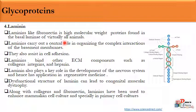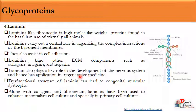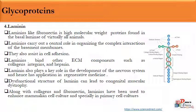The next component is laminin, a high molecular weight protein found in the basal lamina of all animals. It plays a central role in organizing the complex interactions of the basement membrane. Laminin also helps in cell adhesion and in the development of the nervous system, and is applied in regenerative medicine. Dysfunction of laminin can lead to congenital muscular dystrophy. Along with collagen and fibronectin, laminin can be used in mammalian cell culture as an attachment matrix and has many binding regions for collagen, integrin, and heparin.